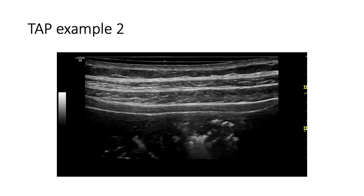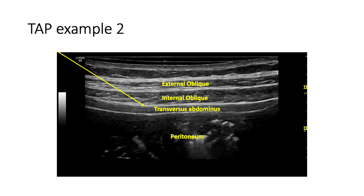Here's another example where the muscle layers are very thin. The needle would need to be carefully advanced from medial to lateral between the internal oblique and the transversus abdominus muscles, taking care not to perforate the underlying peritoneum or bowel.